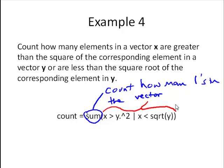We're asking, is the element of x greater than the square of the corresponding element in y? Or, is the element of x less than the square root of the corresponding element in y? If either of these is true, we'll get a 1 in this vector, and then we'll sum up all of the ones.